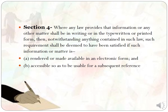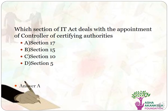The correct answer is option D, that is Section 4. Section 4 deals with laws providing that information or any other matter shall be in written or printed form. Notwithstanding anything contained in such law, such requirement shall be deemed to have been satisfied if such information or matter is rendered or made available in electronic form and is accessible so as to be usable for a subsequent reference. This means that laws in which information is given in electronic form and which can be accessed for subsequent reference shall come within the ambit of IT Act 2000.